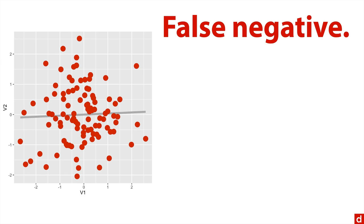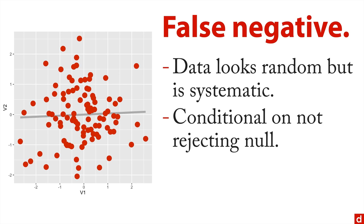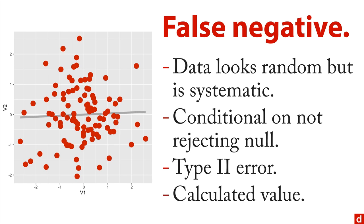Again, I randomly sampled from the data until I got a set that happened to look pretty flat. A false negative is conditional on not rejecting the null. You can only get a false negative if you get a negative result - you say there's nothing there. It's also called a type II error, and this is a value you have to calculate based on several elements of your testing framework, so it's something to be thoughtful of.